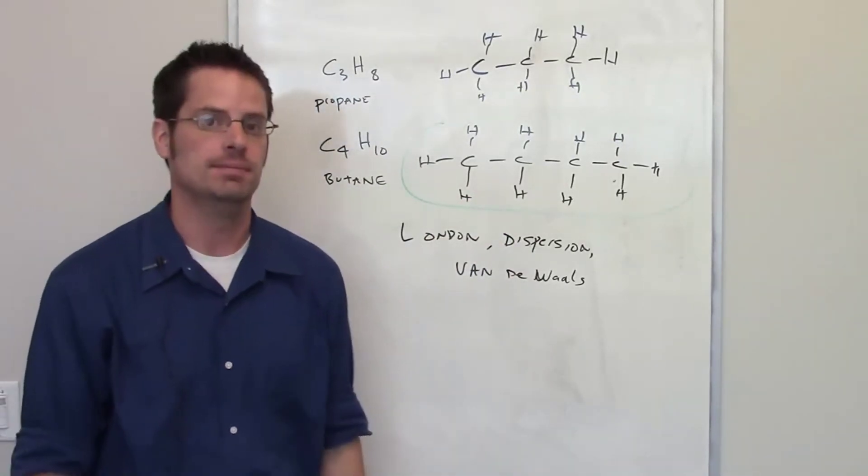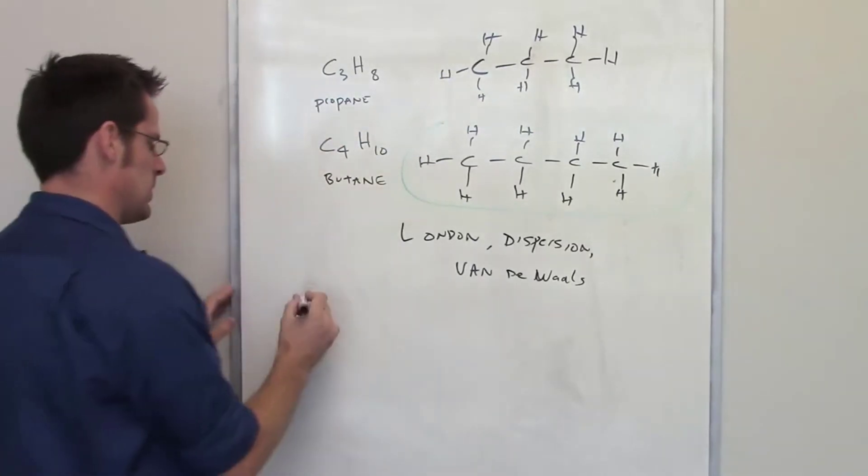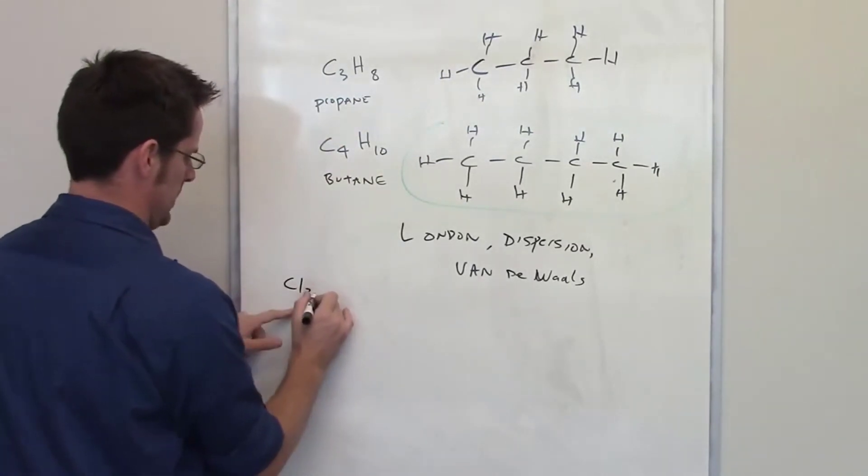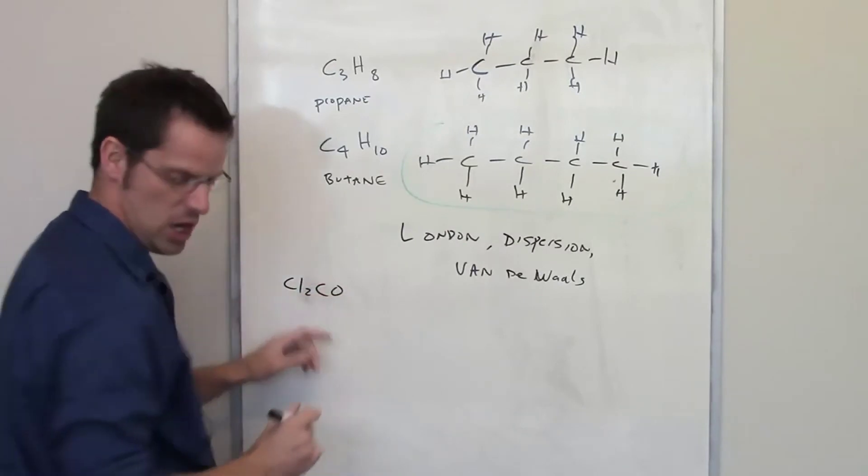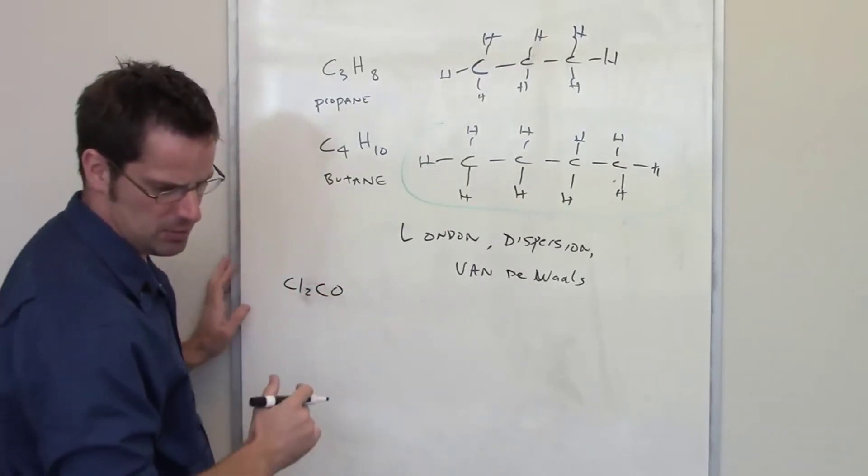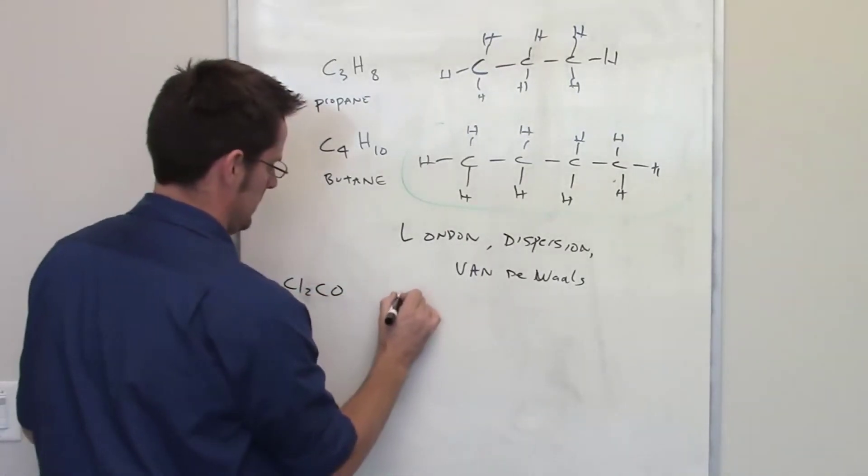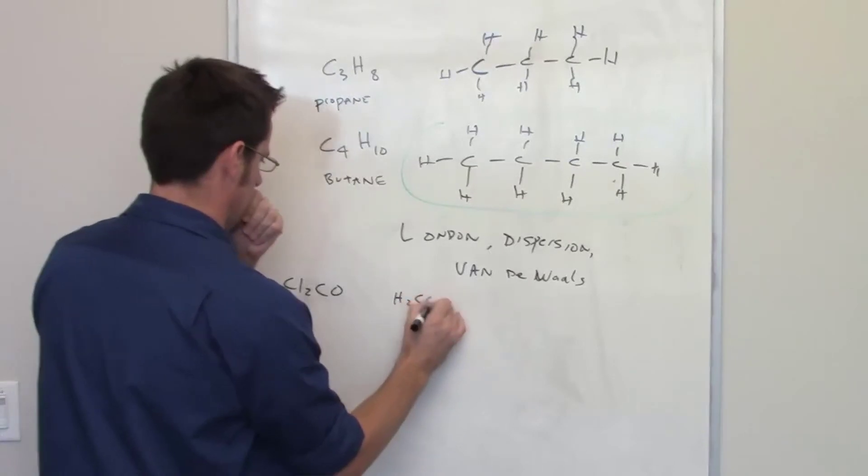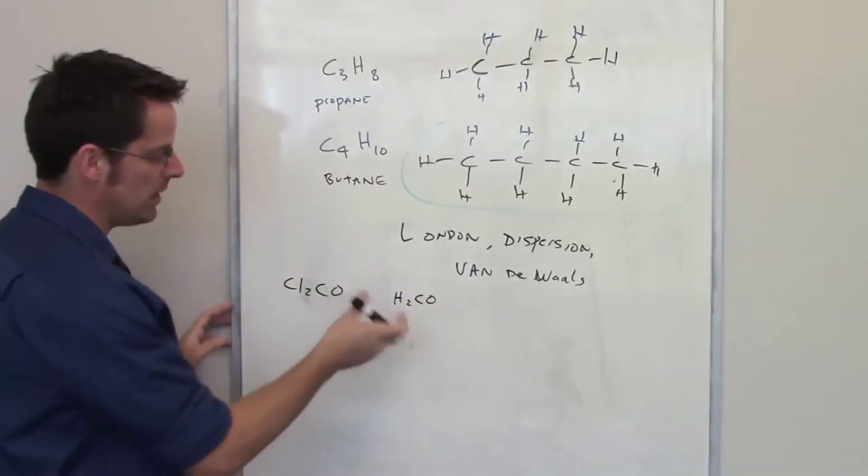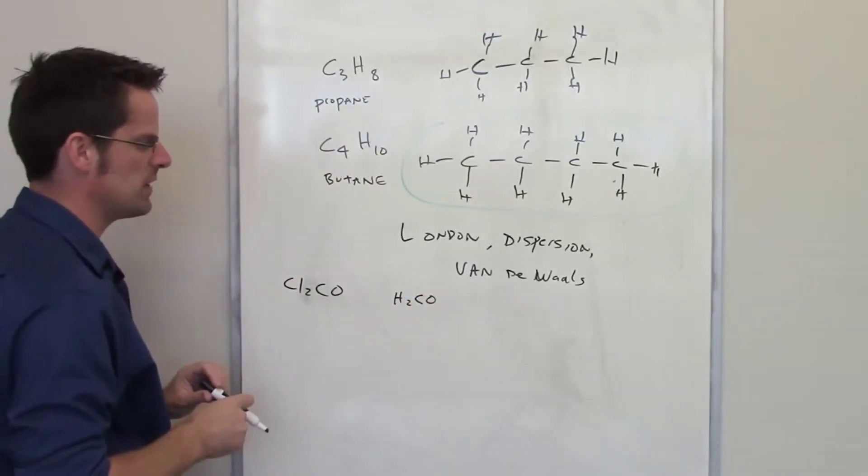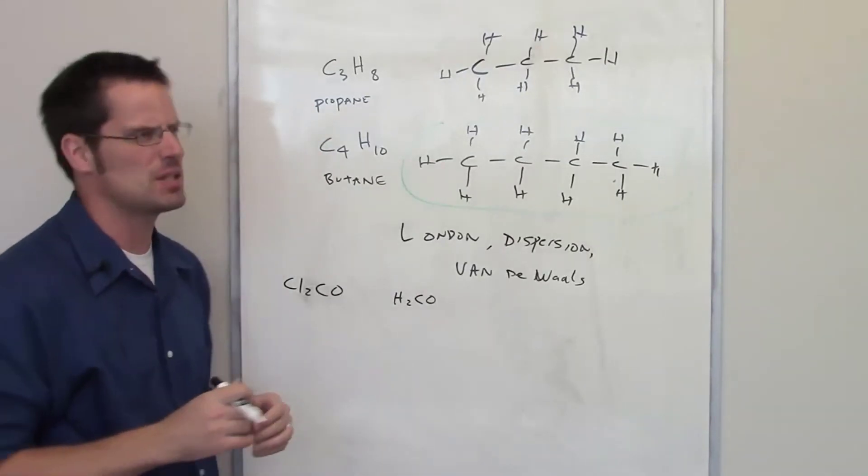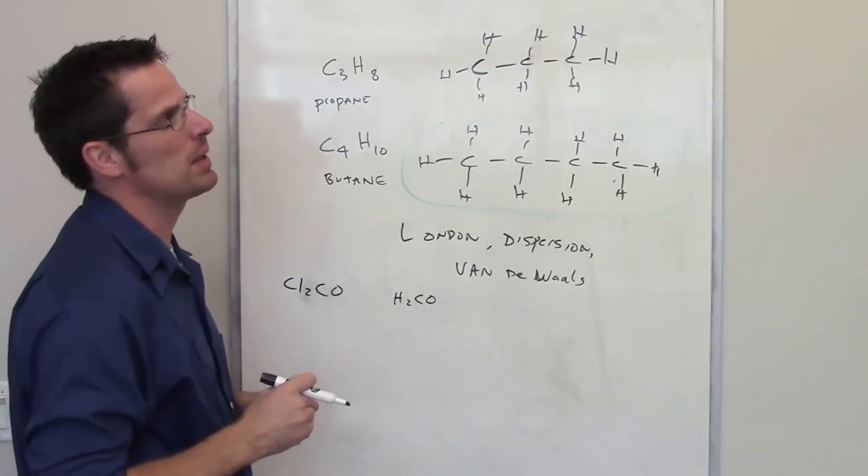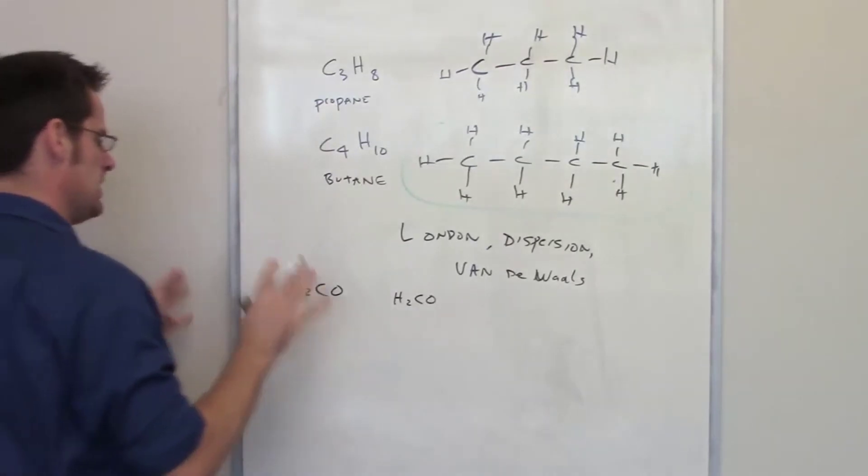In this next problem, we're given two different molecules: phosgene, whose formula is Cl₂CO—and phosgene is a terrible chemical warfare agent—and then formaldehyde, which has this formula. Formaldehyde is a preservative found in cadaver labs. They don't use it—I think they've replaced it with other preserving agents—but anyway, it has a unique smell.